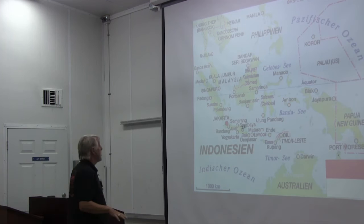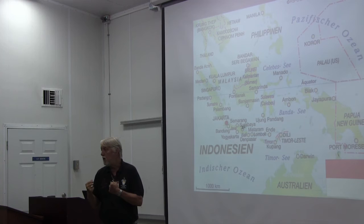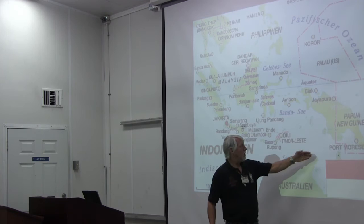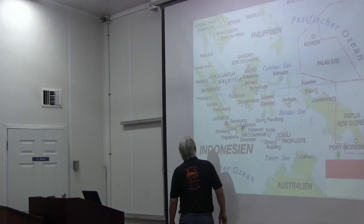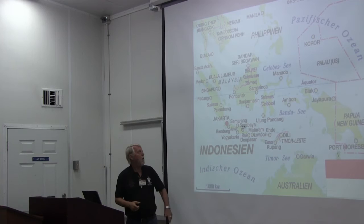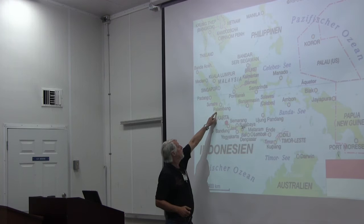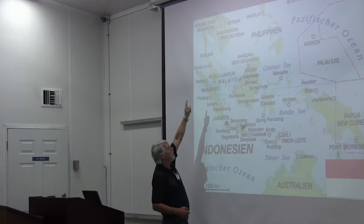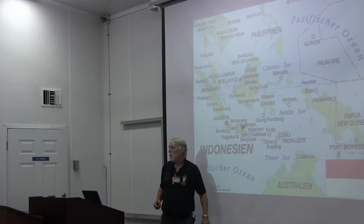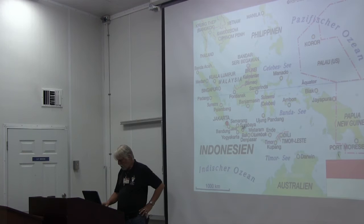During ice ages, when a lot of water is drawn out of the sea and sea level drops, you could walk from here to here across these continental shelves. Right in between Sumatra and Java is a very special group of islands — the Krakatau Islands.